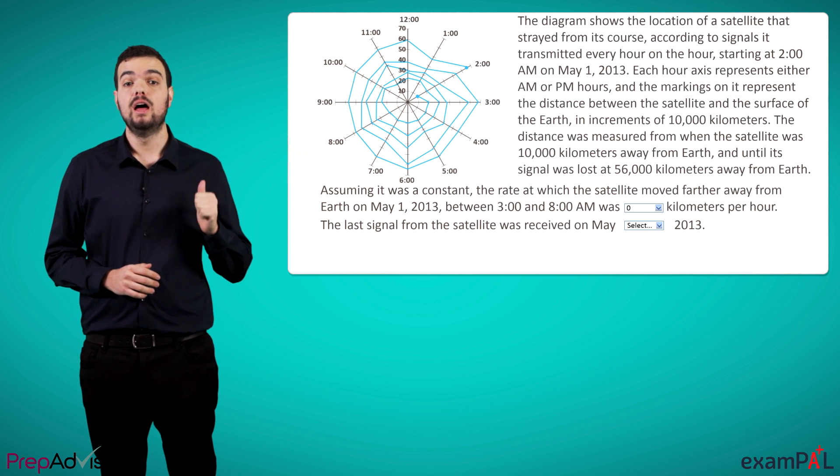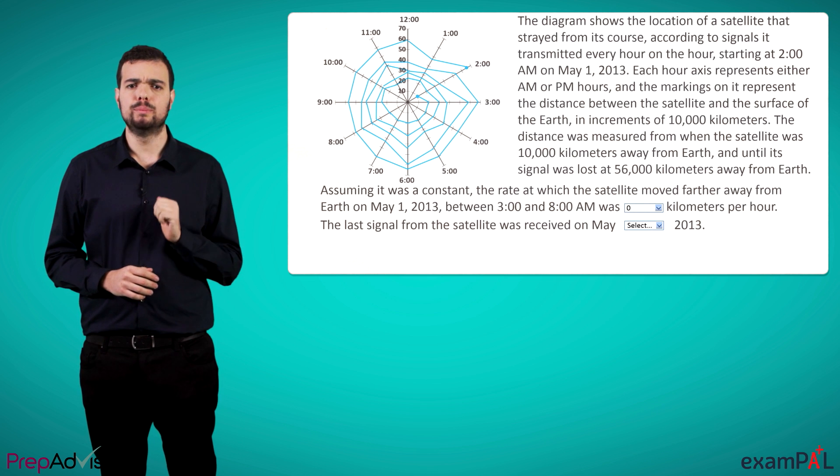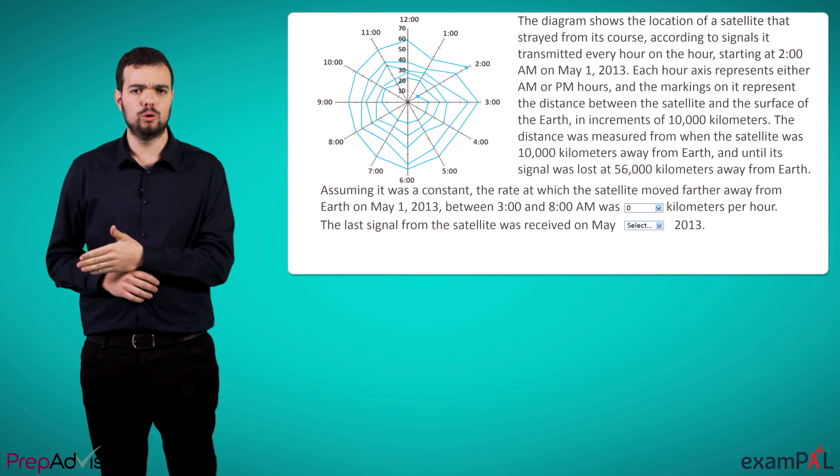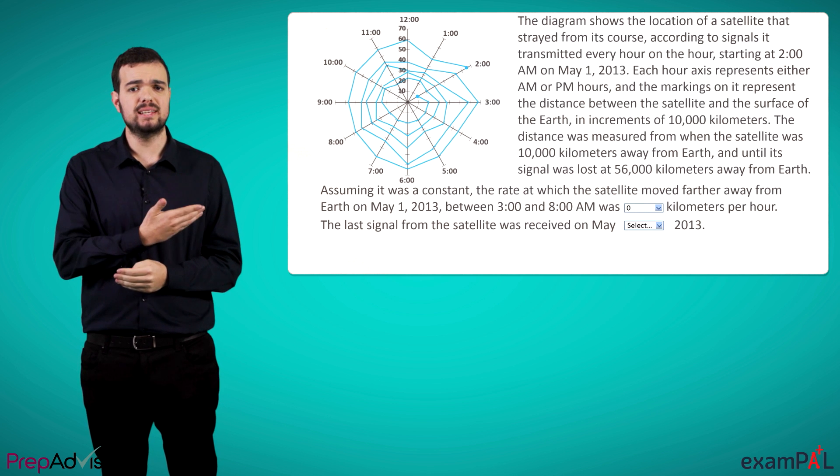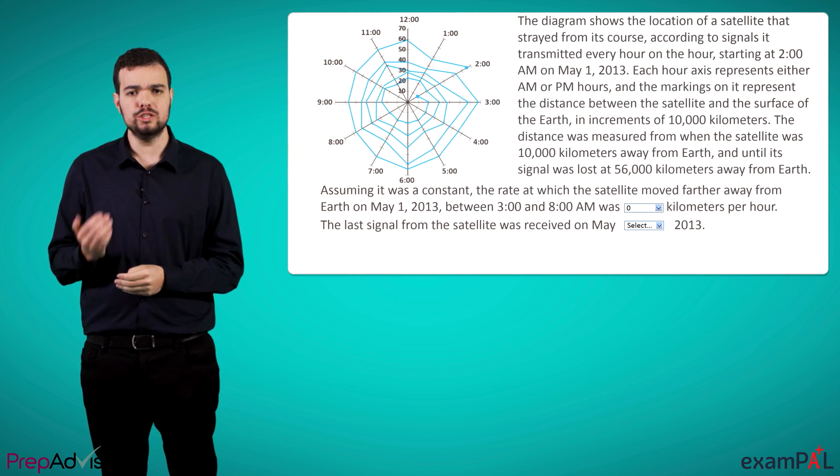In this case, the first statement asks us to represent the amount of kilometers per hour a satellite was flying at a specific time, while the second statement asks us to determine which date the satellite last sent a signal. When looking at the statements, it's important to ask ourselves several questions.